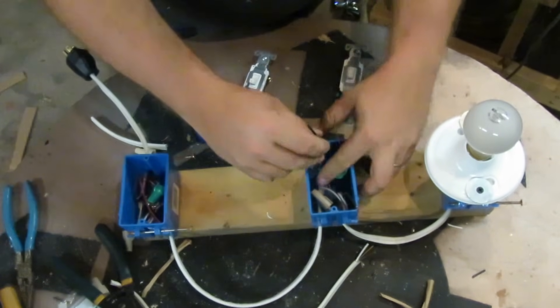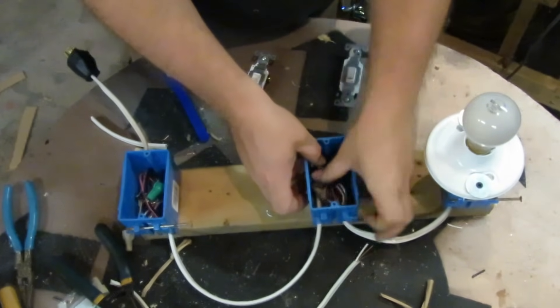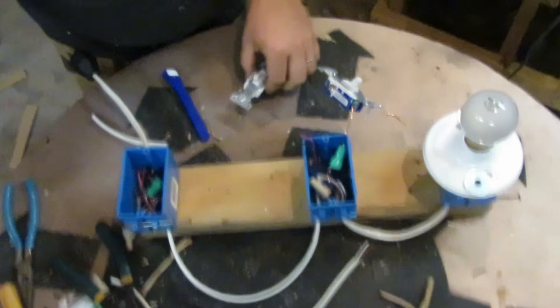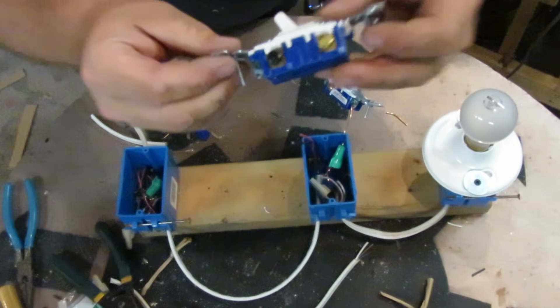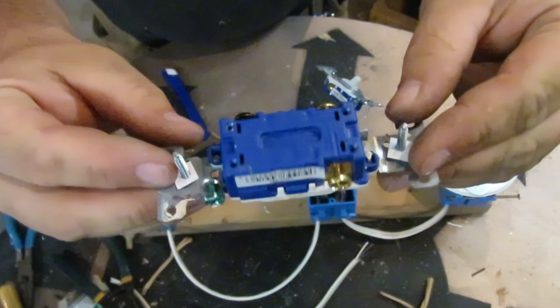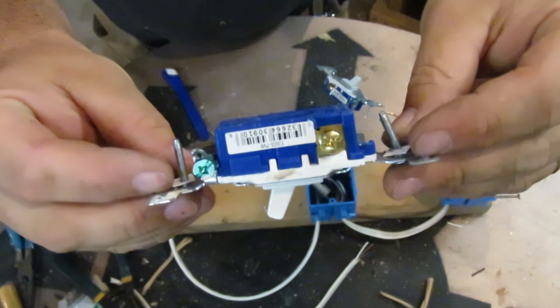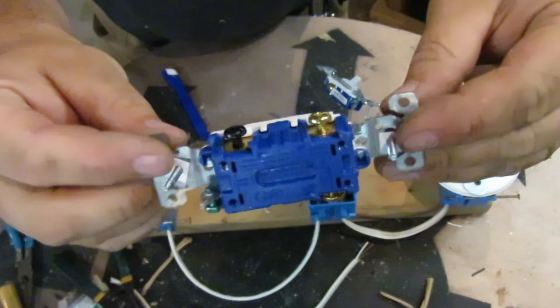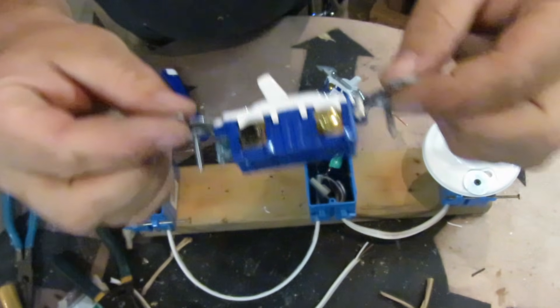And well, this is our three-way switch. It has two brass screws and a black screw. Now the brass screws are for the travelers, you put one to each, and the black screw is the common.